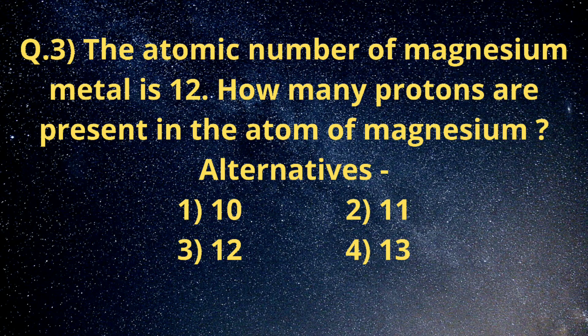Question number 3: the atomic number of magnesium metal is 12. How many protons are present in the nucleus of the atom of magnesium? The alternatives are: number 1 - ten, number 2 - eleven, number 3 - twelve, number 4 - thirteen.